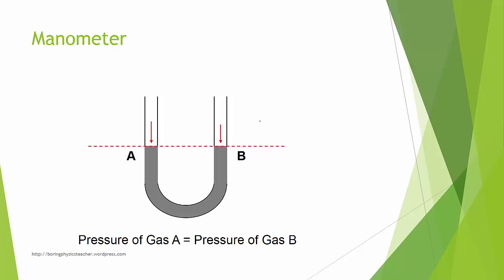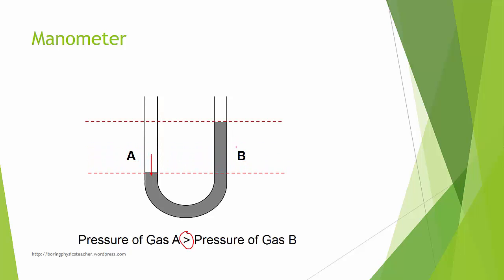Looking at this diagram, you'll find that the pressure of gas A equals the pressure of gas B when both press down equally, so the liquid levels are even. If pressure of gas A is bigger than gas B, it presses down stronger and pushes up on the other side. The height difference between the two levels indicates the pressure difference between A and B.